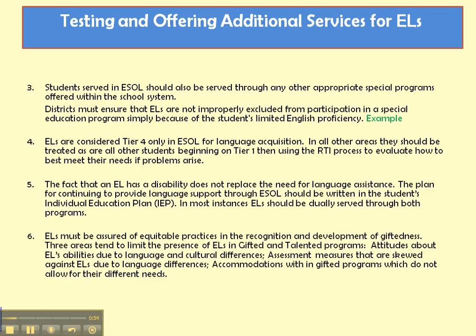English learners must be assured of equitable practices in the recognition and development of giftedness. Three areas tend to limit the presence of English learners in gifted and talented programs: attitudes about English learners' abilities due to language and cultural differences; assessment measures that are skewed against English learners due to language differences; and accommodations within gifted programs which do not allow for their different needs.